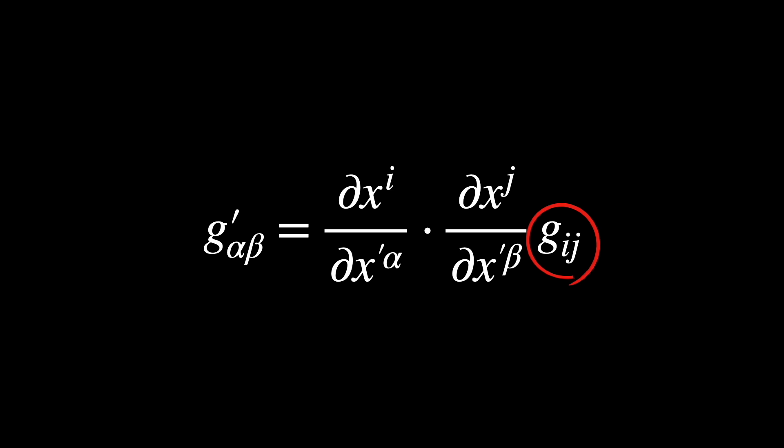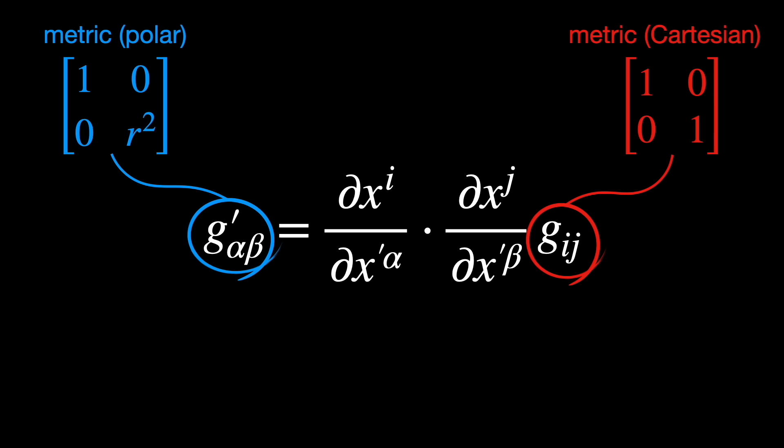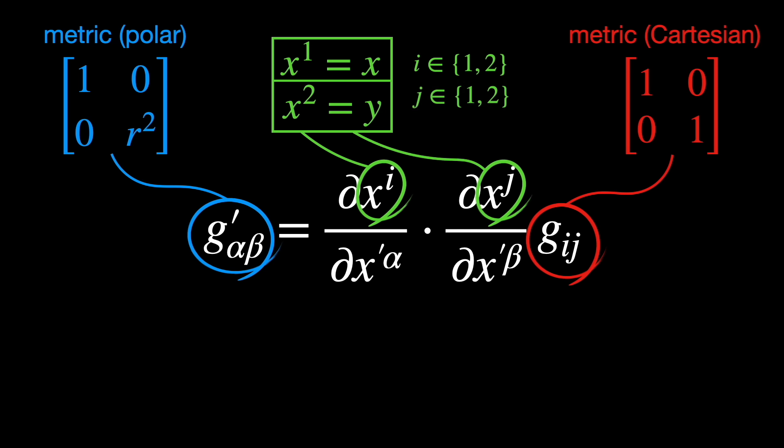Let's analyze each term. Gij is our original metric, before the coordinate transformation. G'αβ is the same metric, but after the transformation. xi are the original coordinates, x1 is x and x2 is y, for i equals 1 or 2. Same thing for xj, with j equals 1 or 2.